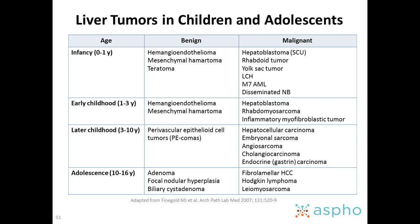Less frequently: yolk sac tumors, LCH, M7, et cetera. Between one and three years of age, think of hemangioendothelioma and mesenchymal hamartomas, but for a malignant tumor, always hepatoblastoma, followed by biliary tract rhabdomyosarcoma.